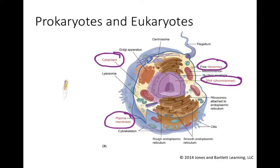We'll talk about a couple of other structures of prokaryotes in the next slide. I did want to point out that this image is to scale. A prokaryote is on the order of about a micrometer in width and two to three micrometers in length for a typical Bacillus. Eukaryotic cells — red blood cells, for example — are about 10 micrometers in diameter, and white blood cells are up to 20 micrometers in diameter. So a bacterial cell is quite small relative to the size of a eukaryotic cell.